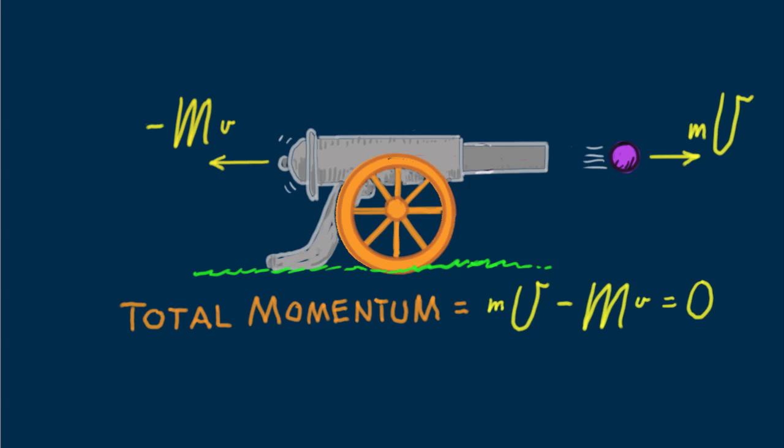In any interaction where no external impulse is exerted, momentum remains unchanged. We say momentum is conserved. We call this the conservation of momentum.